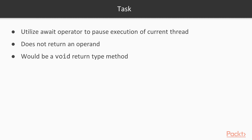With asynchronous methods that have a return type of task, you can utilize the await operator to pause the execution of the current thread until the called asynchronous method has completed. Keep in mind that an asynchronous method that returns a type of task basically does not return an operand. Therefore, if it were written as a synchronous method, it would be a void return type method. This statement might be confusing, but it will become clear as we move ahead.